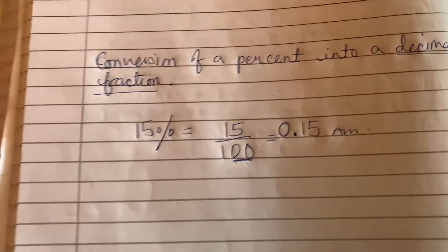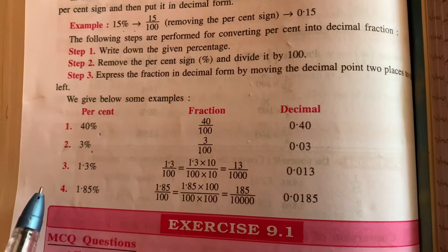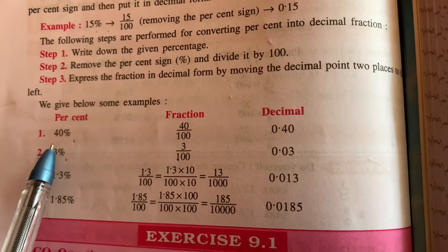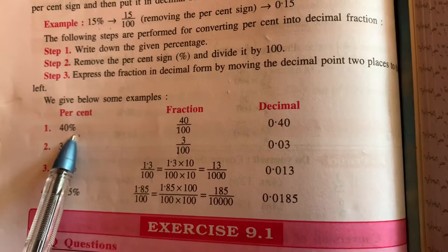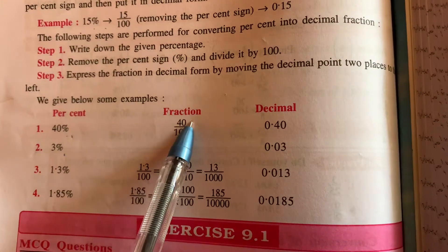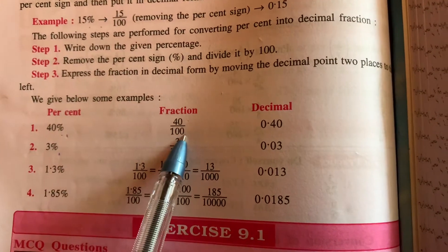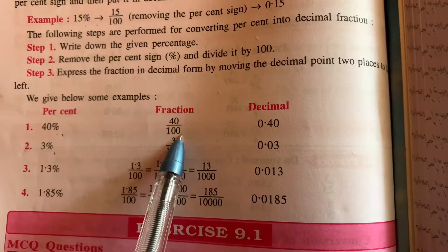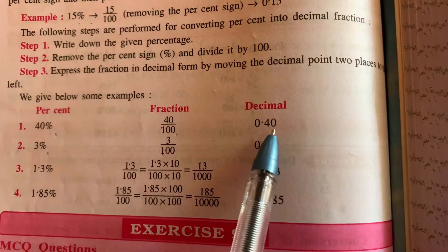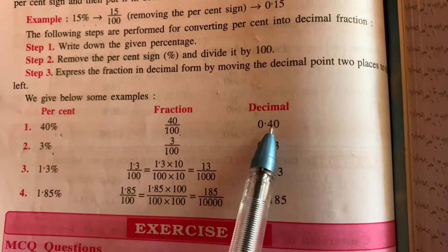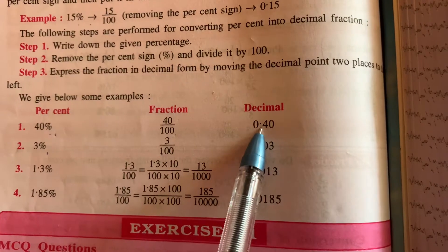In the book there are more examples. Take 40 percent — expressed as a fraction it is 40 over 100, which is 40 hundredths. Since this is hundredths, that means two decimal places. Move one, two places and put the point, giving 0.40.